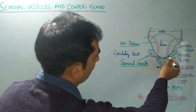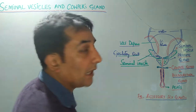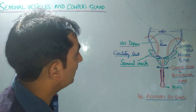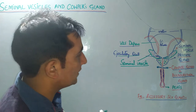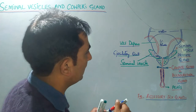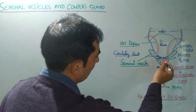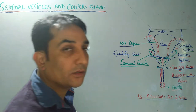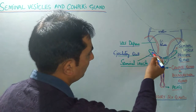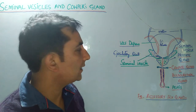The vas deferens comes and merges with the duct of the seminal vesicle to form a common duct which we call the ejaculatory duct. The duct of the seminal vesicle and the duct of the vas deferens merge to form the ejaculatory duct, which then moves on and goes into the urethra. This is the location of the seminal vesicle.